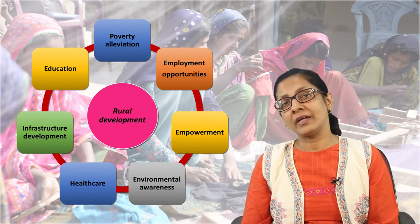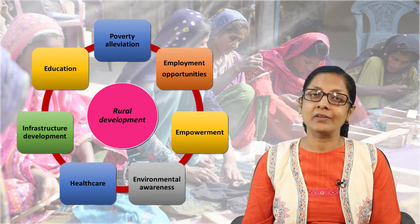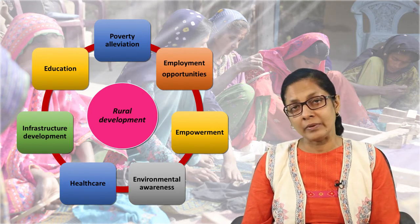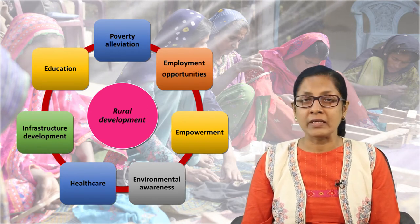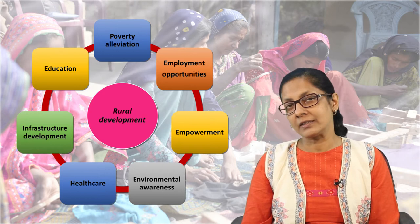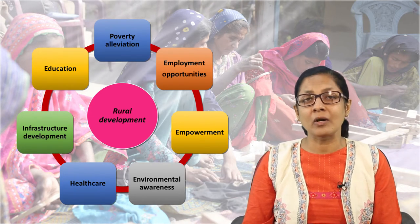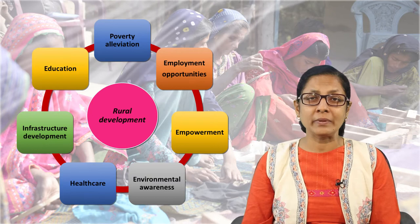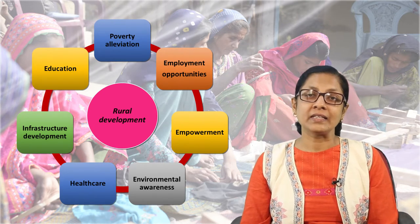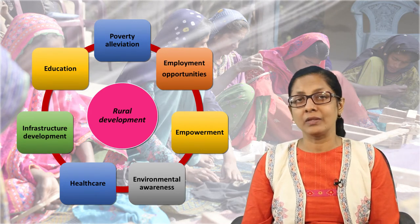Another area requiring attention is employment opportunities, which is directly related to poverty alleviation. More employment opportunities mean more people will be employed, whether skill-based or non-skill-based. There are government schemes like MGNREGA providing employment. In the present context, employment is being provided through competency mapping — identifying an individual's skill sets and finding suitable jobs for them. Employment opportunities are directly related to poverty alleviation.